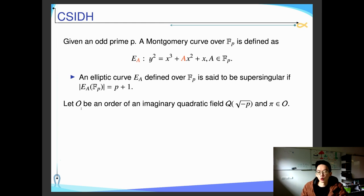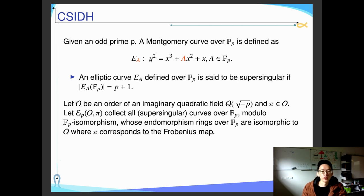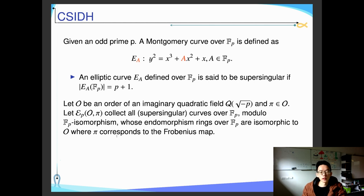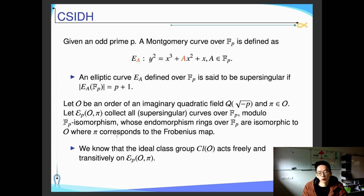Let O be an order of an imaginary quadratic field, and let pi be an element in this order. We let the set E_O collect all supersingular curves defined over Fp, up to Fp-isomorphism, whose endomorphism ring is isomorphic to this order O. The element pi corresponds to the Frobenius map, which maps (x, y) to (x^p, y^p). We know that the ideal class group of this order acts freely and transitively on this set.